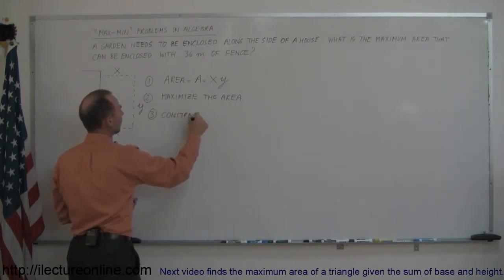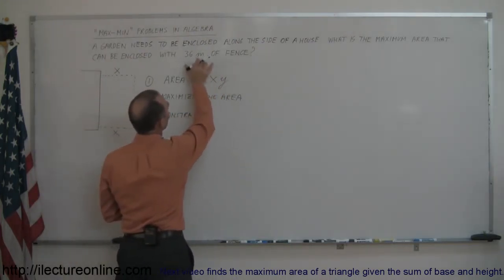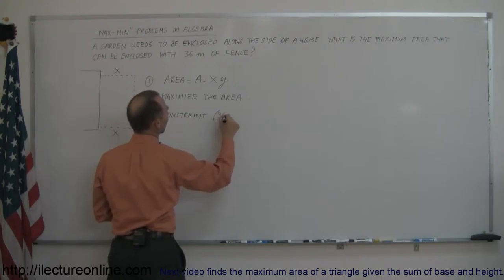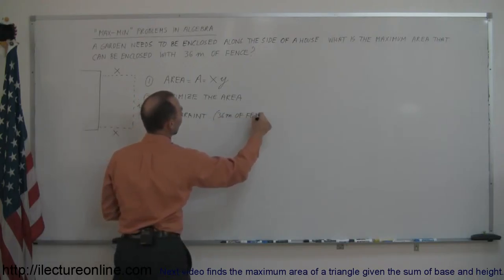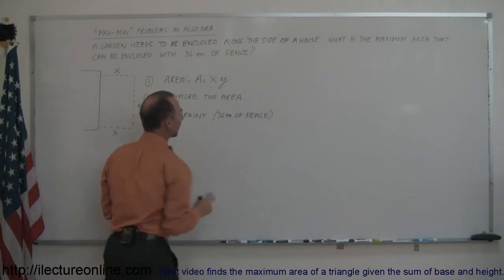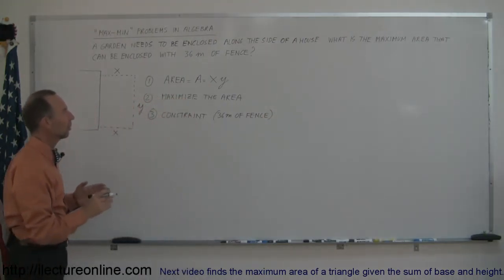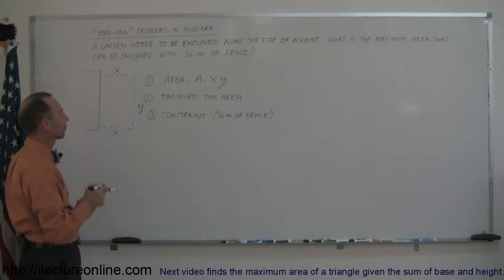So we're looking for a constraint. In this case, the constraint is that we only have 36 meters of fence. 36 meters of fence, that's the constraint, to eliminate one of those two variables. So we need to be able to use this information to express x in terms of y or y in terms of x.